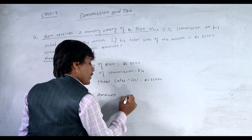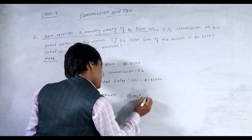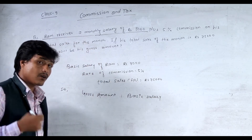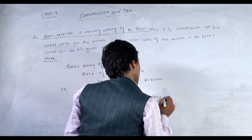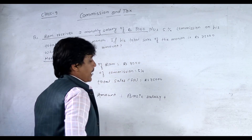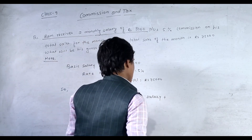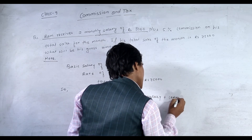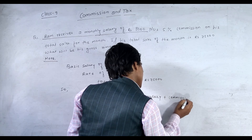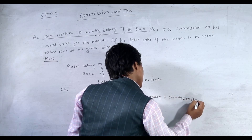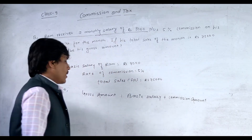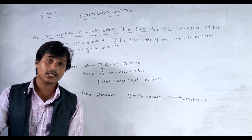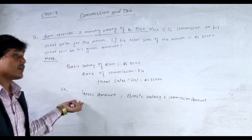Last ma, the total amount he earns is called the gross amount. Gross amount taken by Ram is equal to basic salary plus commission amount — that is, what he gets after selling the goods. Gross amount = Basic Salary + Commission Amount.